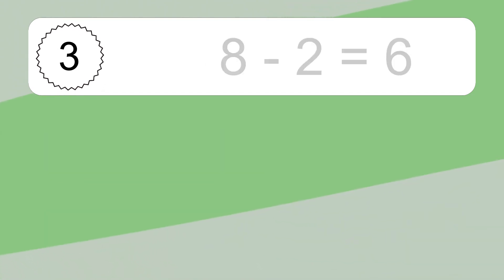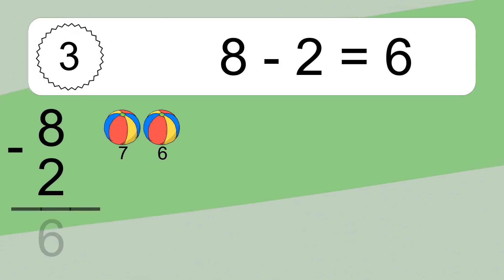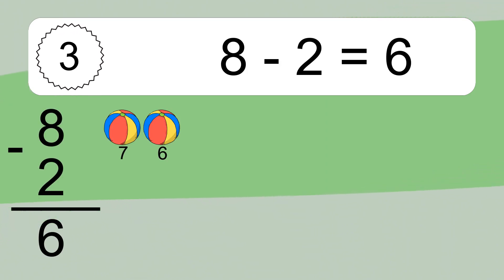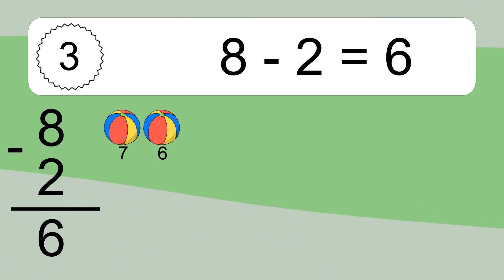8 minus 2 equals what? 8 minus 2 equals 6. Let's count it. 7, 6.